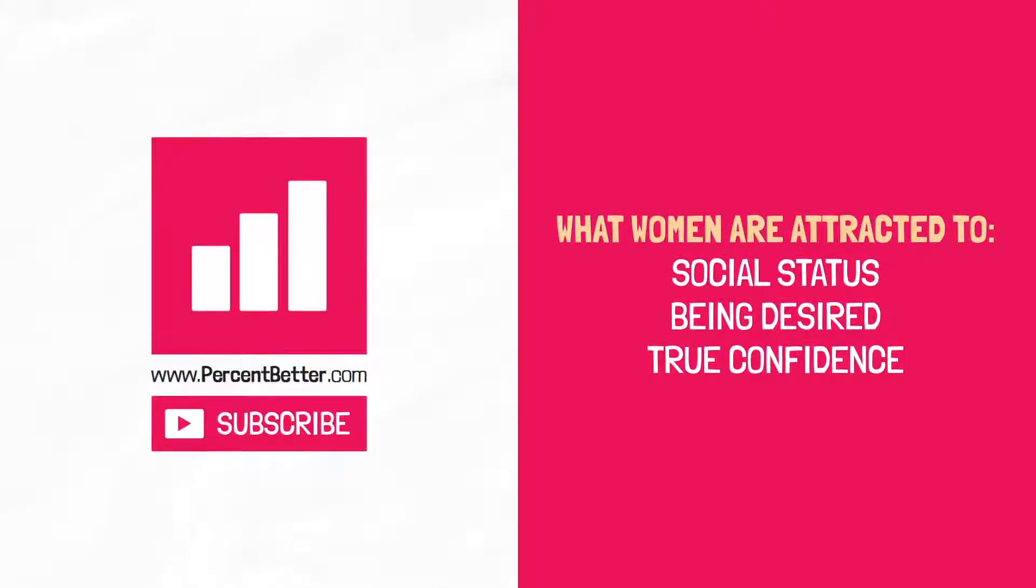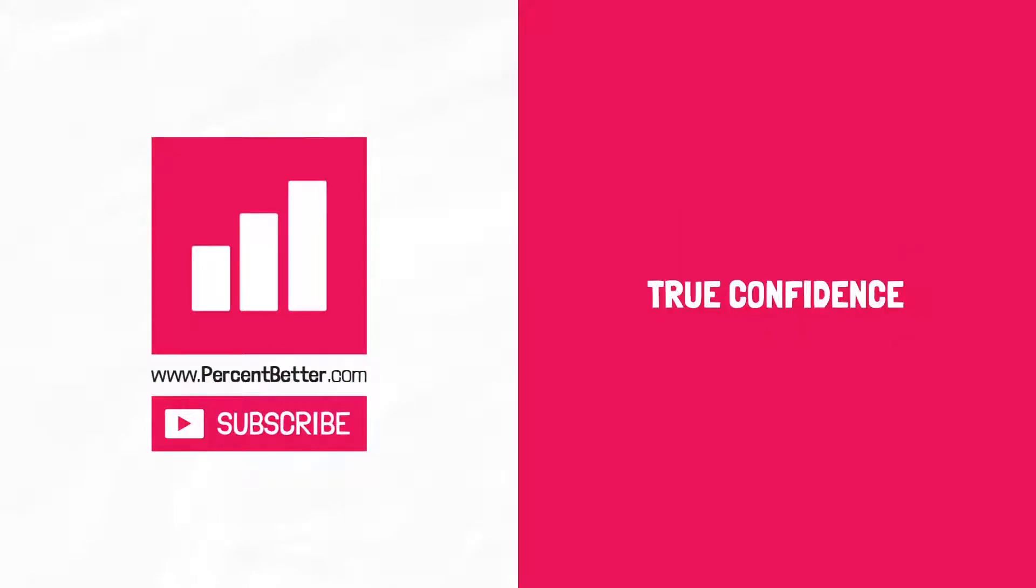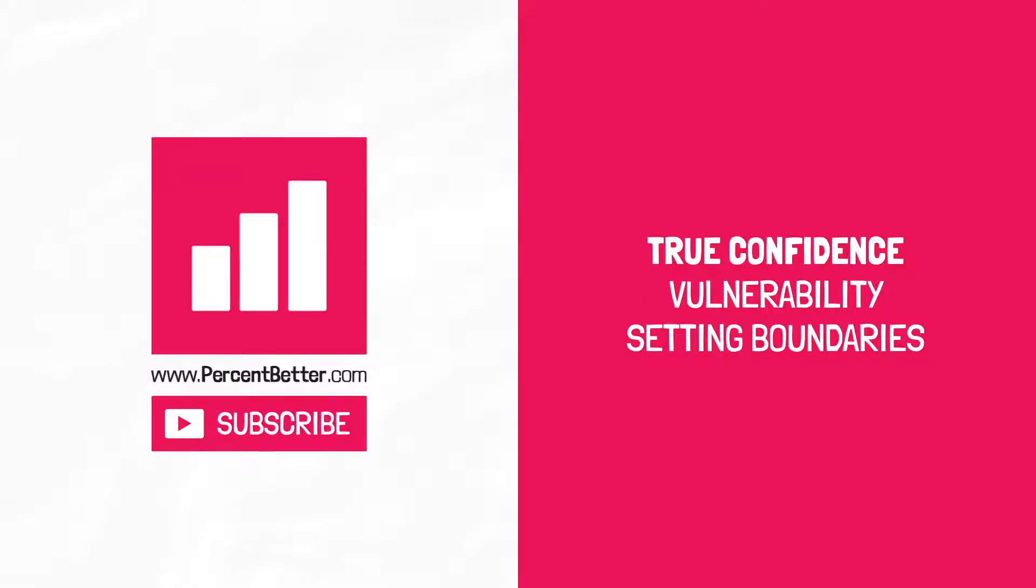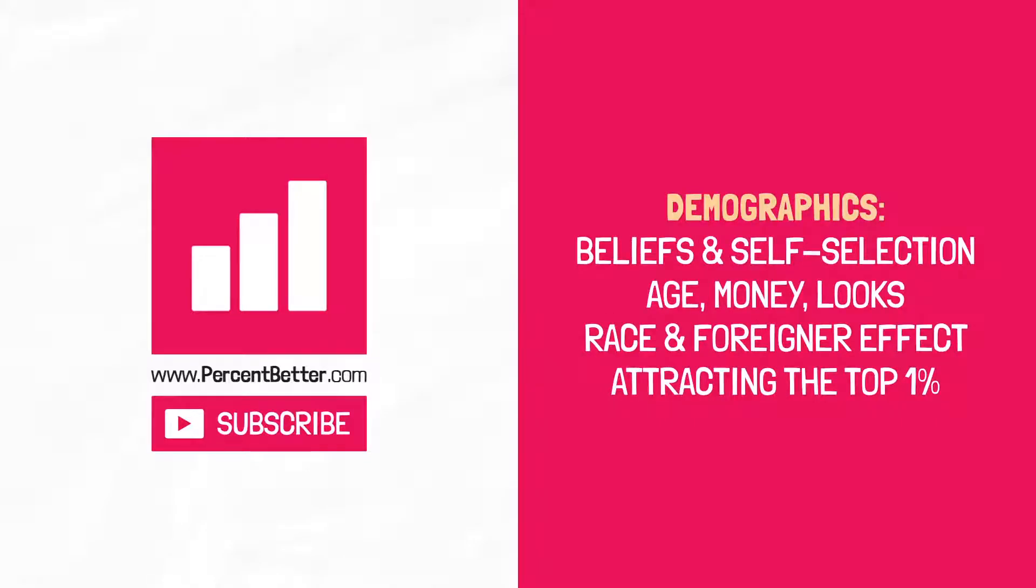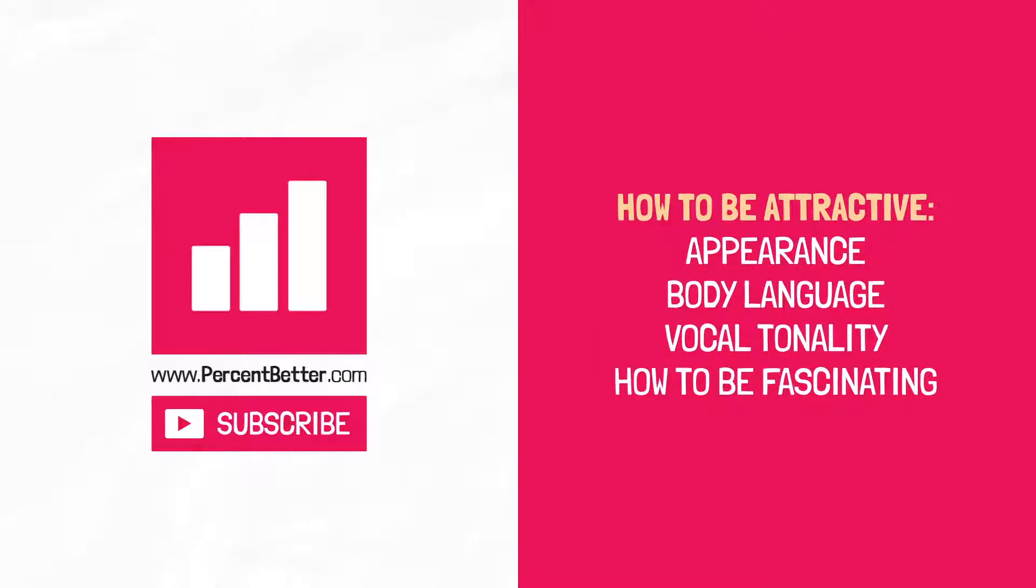In part one reality, we learned about what women are attracted to. Social status, being desired, true confidence, with true confidence being made up of vulnerability and setting boundaries. In part two strategy, we learned about polarization, the three categories of women, which are unreceptive, neutral, and receptive, and we also learned about overcoming rejection. In part three, honest living, we dive into demographics, which is made up of beliefs and self-selection, age, money, and looks, race, and the foreigner effect, and attracting the top 1%. We also learned how to be attractive, appearance, which is made up of grooming and how you dress, body language, vocal tonality, and how to be a fascinating person. My name is Brandon, and I hope this video made you 1% better.